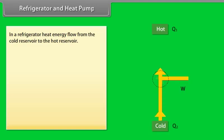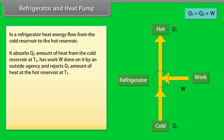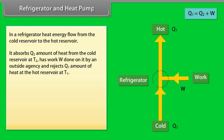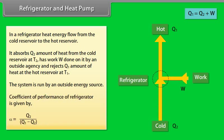Refrigerator and heat pump. In a refrigerator, heat energy flows from the cold reservoir to the hot reservoir. It absorbs Q₂ amount of heat from the cold reservoir at temperature T₂, has work W done on it by an outside agency, and rejects Q₁ amount of heat to the hot reservoir at T₁. The system is run by an outside energy source. The coefficient of performance of a refrigerator is given by α = Q₂ / (Q₁ − Q₂).